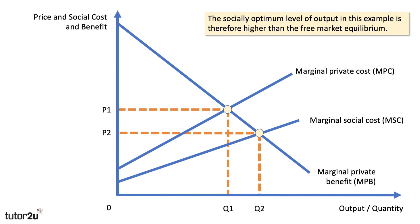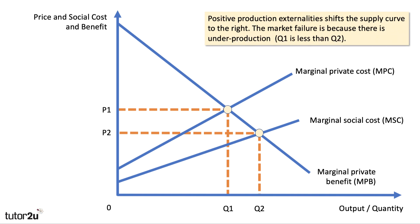Because of this, the socially optimum level of output will be higher than the free market equilibrium. If we only think about private costs and benefits, we end up at Q1. But if we think about the external benefits to other people, which brings down social costs, we want to be at Q2. So positive production externalities shift the supply curve to the right, and market failure occurs because there's underproduction when there are positive production externalities. The market equilibrium is Q1; the social optimum is Q2.